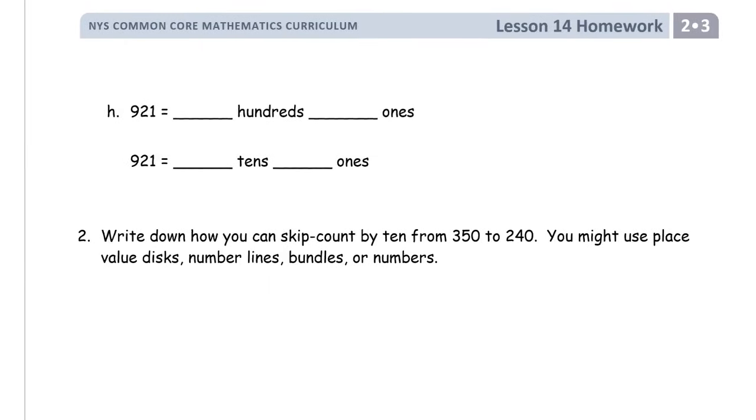And here's our last example for that. Nine hundred and twenty-one. If you put it in the HTO chart, you've got nine hundreds. And the rest is going to be in ones, so you're going to need to make all twenty-one of that in ones. But if we did it all in tens, then we'd need ten tens for every hundred. So that would be ninety tens.